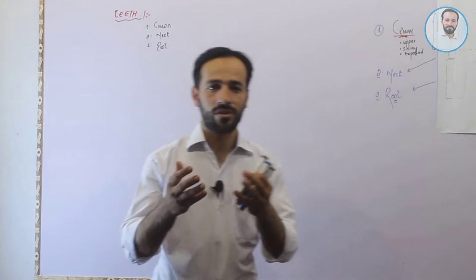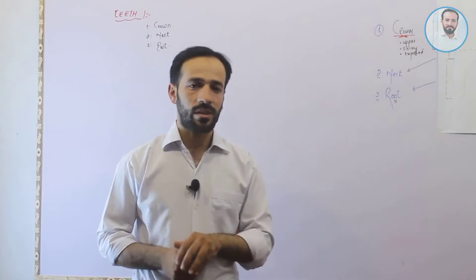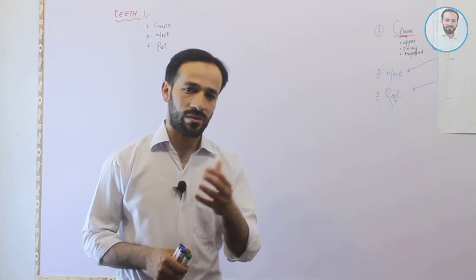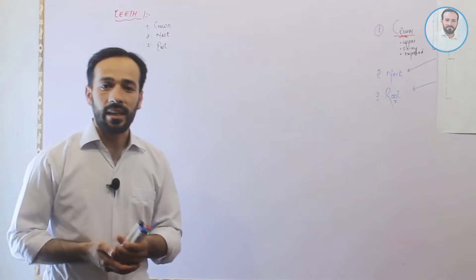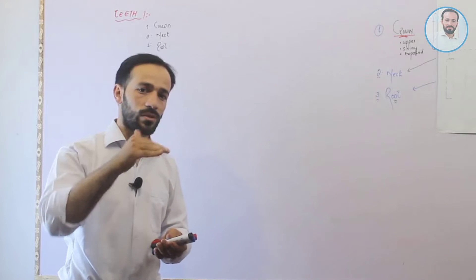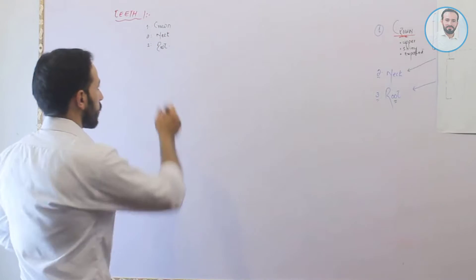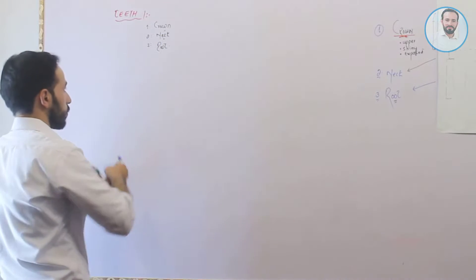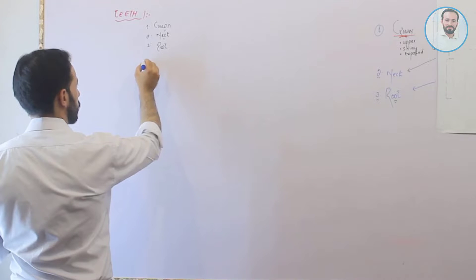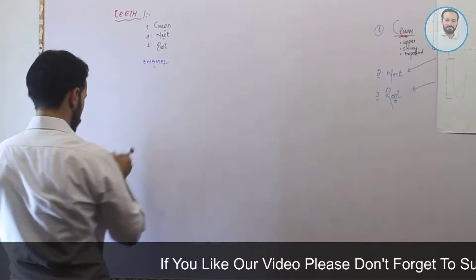In the previous video, we introduced the tooth and its morphological macro parts. We discussed the crown and the enamel. In this lecture, we are discussing the dentine part of the tooth, which is the part below the enamel. As we know, every tooth has three parts: the crown, the neck, and the root. In the previous lecture, we discussed the enamel.